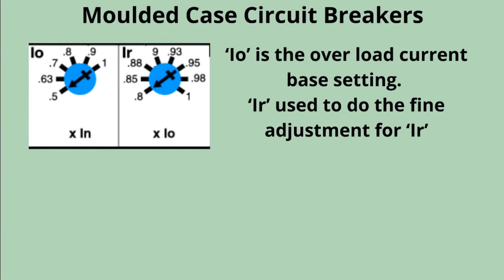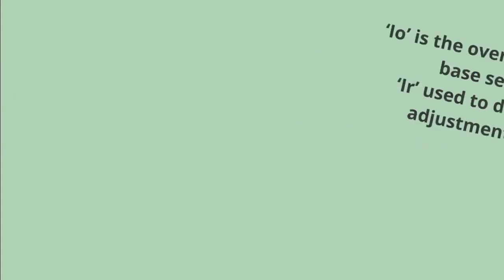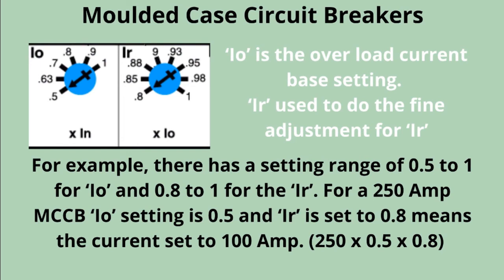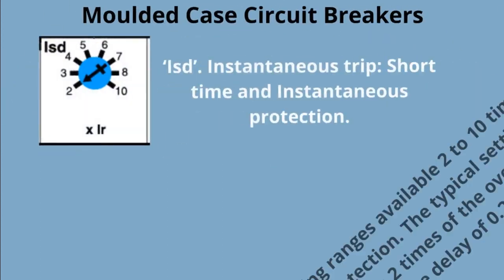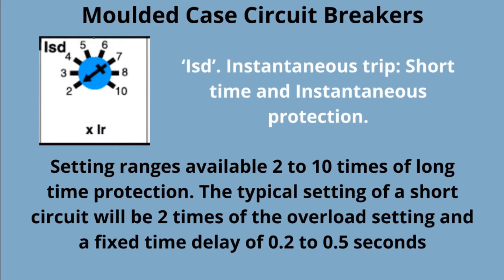I-O is the overload current base setting. For example, there is a setting range of 0.5 to 1 for I-O. For a 250 amp MCCB, if I-O is set to 0.5 and I-O is set to 0.8, the current set to trip is 100 amp. ISD covers instantaneous trip, short time, and instantaneous protection. The setting range is available from 2 to 10 times of long time protection. The typical setting for short circuit will be 2 times of the overload setting, with a fixed time delay of 0.2 to 0.5 seconds.